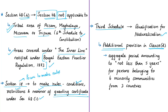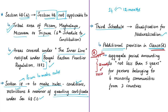Under the current Clause D of the Third Schedule, the qualification for naturalization requires that during the 14 years immediately preceding a period of 12 months before the date of application, the person has either resided in India or been in the service of the Government of India for an aggregate period of not less than 11 years. If this condition is satisfied, the person qualifies for naturalization.